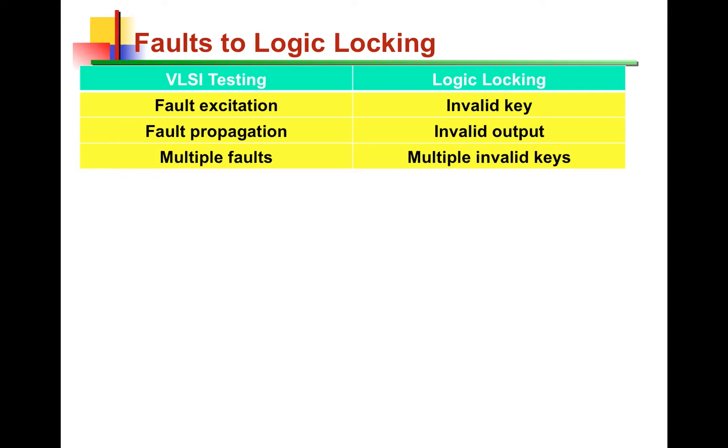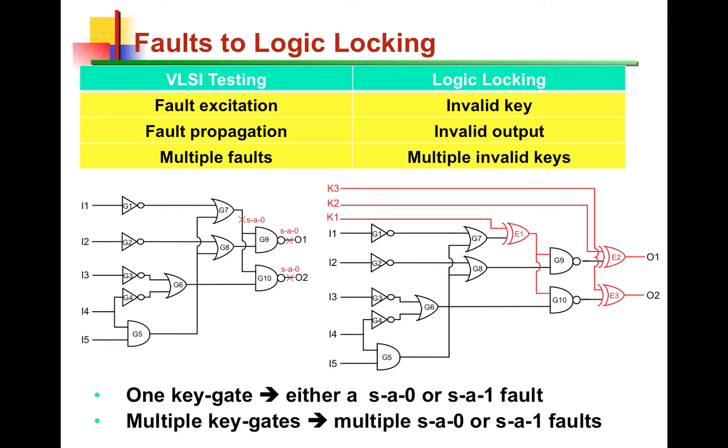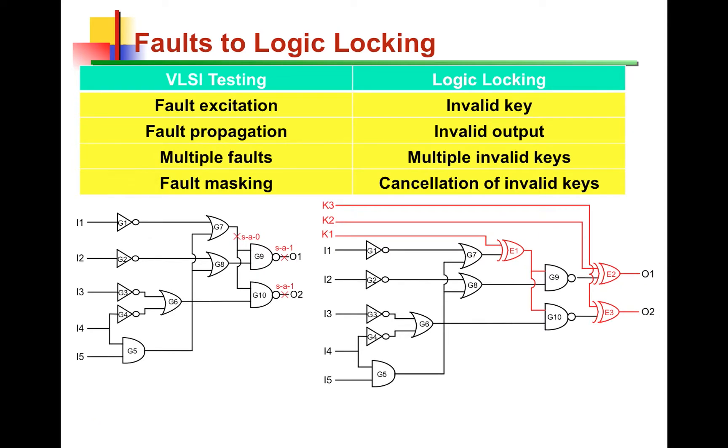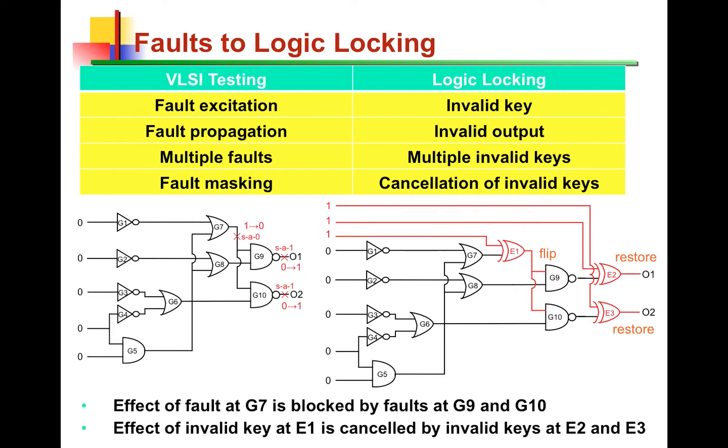When we talk about multiple key gates, or multiple key bits, then we're talking about multiple faults in the VLSI testing domain. So, on the left, we have multiple stuck faults, and on the right, we have multiple key gates, E1, E2, E3, which means we have multiple key bits. So, if we're talking about applying invalid keys to multiple of these key gates, this is equivalent to exciting multiple of the faults on the left. And when these faults are activated altogether, it is possible that they may cancel out the effect of each other, just like the effect of invalid key bits cancelling the effect of each other on the right. So, fault masking in the VLSI testing domain is equivalent to cancellation of invalid keys in logic locking.